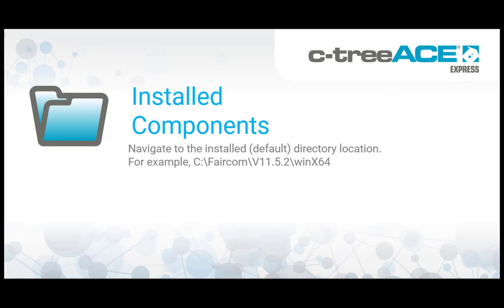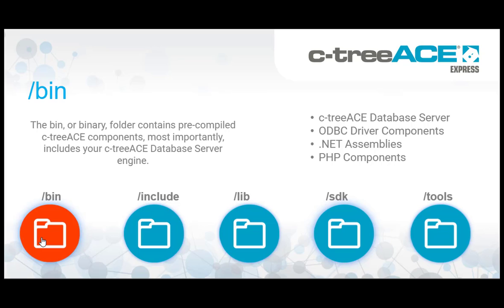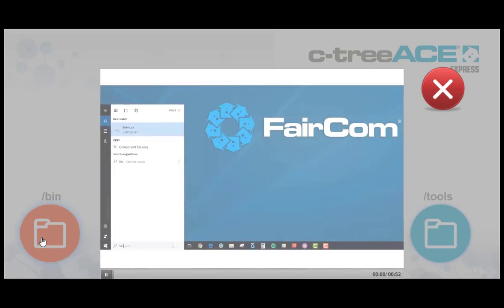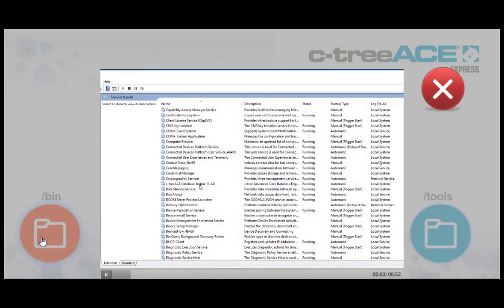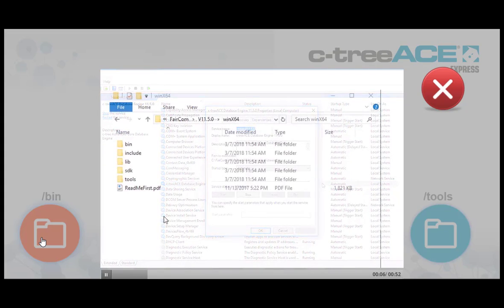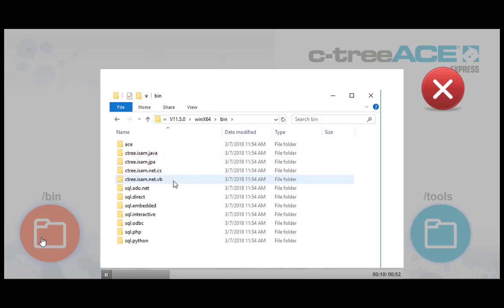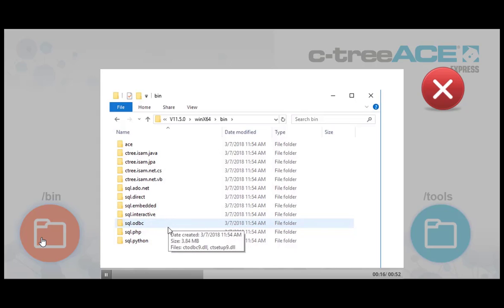With your installation complete, navigate to your installed directory location. For example, a default Windows location is C drive Faircom v11.5.2 WinX64. The bin, or binary, folder contains ready-to-run CtreeAce executables including the CtreeAce database server engine. In this folder area you will also find .NET assemblies, ODBC driver modules, an interactive SQL utility, and PHP setup components.